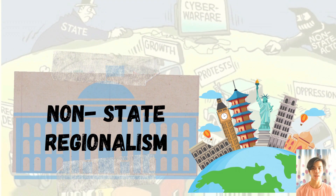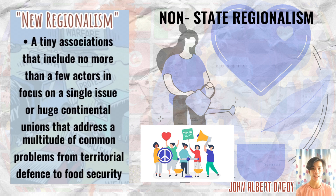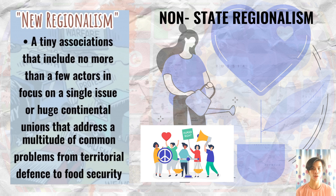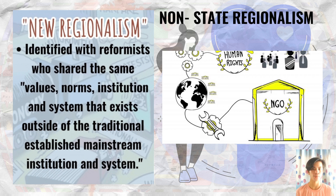Non-state regionalism: it is not only states that agree to work together. Communities also engage in regionalism, and this is called new regionalism. New regionalism includes tiny associations with no more than a few actors focused on a single issue, as well as huge continental unions that address a multitude of common problems — from territorial defense to food security. These rely on the power of individuals, non-government organizations or NGOs, and link up with one another in pursuit of a particular goal, identified with reformists who share the same values, norms, institutions, and systems that exist outside of traditional mainstream institutions.